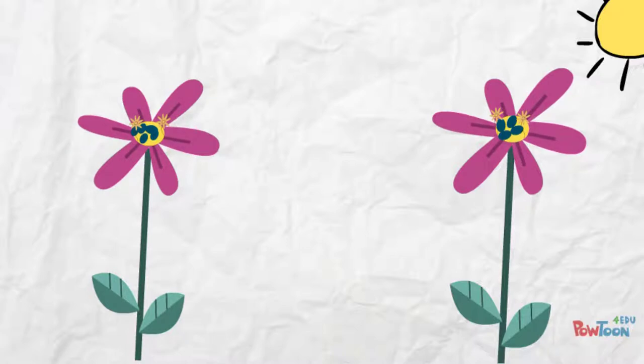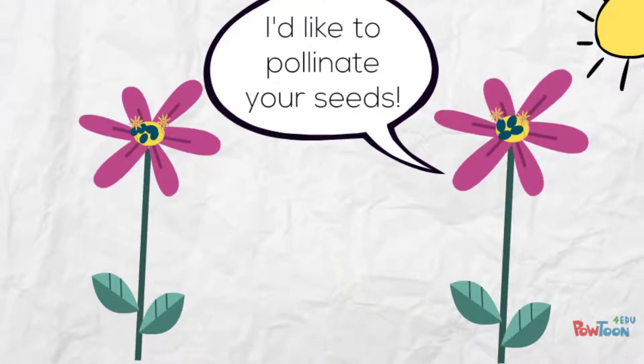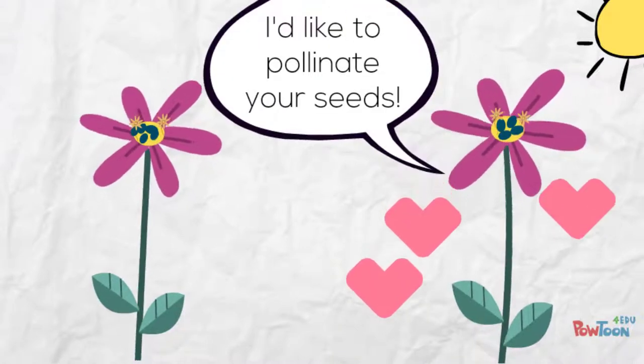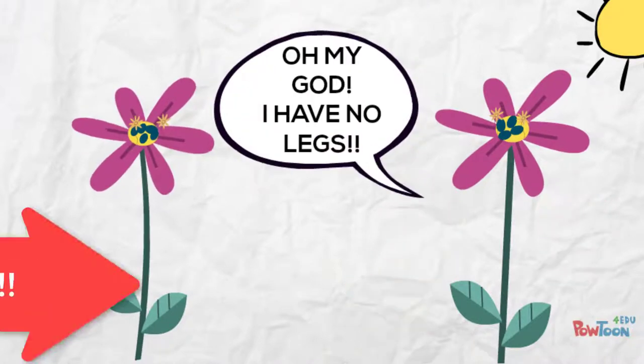In order to get genetic diversity, flowering plants can cross pollinate. I'd like to pollinate your seeds. Okay, come on over. Oh my god, I have no legs! Maybe we can ask somebody mobile to help.